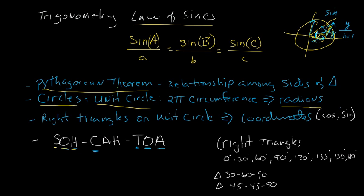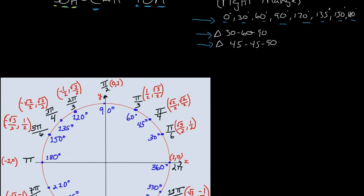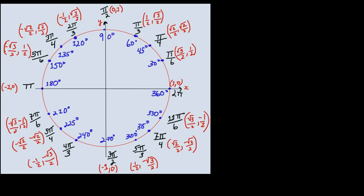We were able to use all of this to calculate these special angles: 0°, 30°, 60°, 90°, 120°, 135°, 150°, 180° — all angles in quadrants 1 and 2, and their corresponding ones in quadrants 3 and 4. We could do that because of the special relationships that a 30-60-90 triangle and a 45-45 isosceles right triangle have, allowing us to build the full unit circle with all of this information.